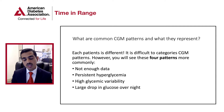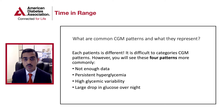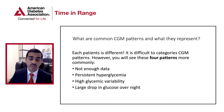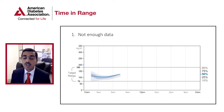Each patient with diabetes is very different, so it is difficult to come up with common glucose patterns. However, in my opinion, these are the four most common glucose patterns you will see in clinical practice: number one, not enough data; number two, persistent hyperglycemia; number three, high glycemic variability — a yo-yo glucose pattern; and number four, a large drop in glucose from the overnight period. Let's take a deep dive into each of these four patterns.